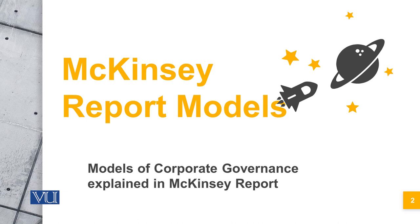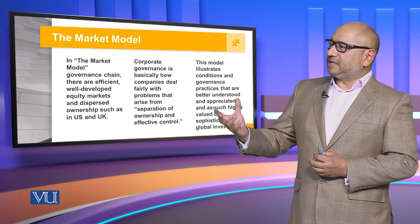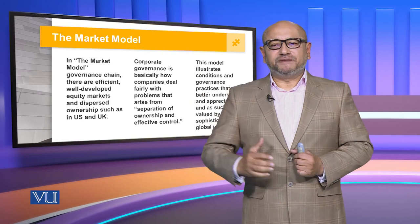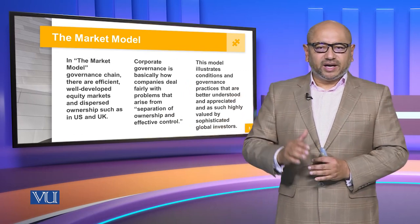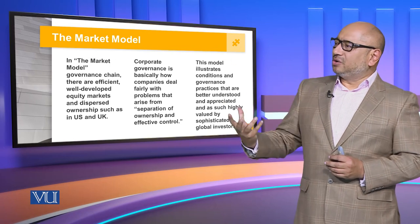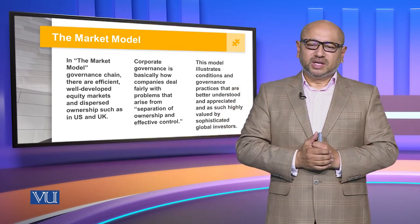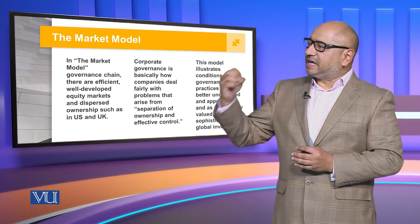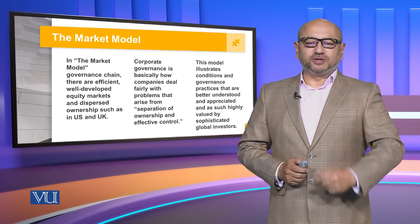When we talk about the McKinsey report model, the market model has a governance chain that is efficient, well-developed, based upon equitable markets, and has a dispersed ownership. This is primarily prevalent in the United States, Canada, the United Kingdom, major parts of Europe, and countries like Australia. It addresses how companies deal fairly with problems arising from the separation of ownership and effective control, and is highly valued by sophisticated global investors, facilitating and creating a global economy for the betterment of all.